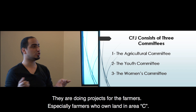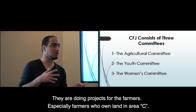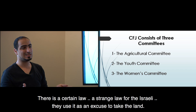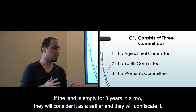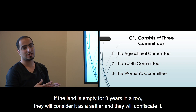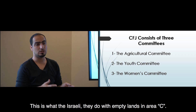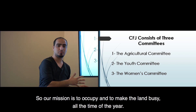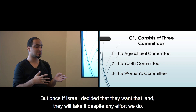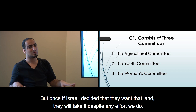We have the Agricultural Committee, the Youth Committee, and the Women Committee. The Agricultural Committee helps farmers, especially those who own land in Area C. There is a strange Israeli law used as an excuse to take land: if the land is empty for three years in a row, they consider it state land and confiscate it. Our mission is to keep the land occupied and busy all year. Most of the time we succeed, but if Israel decides they want the land, they will take it regardless.